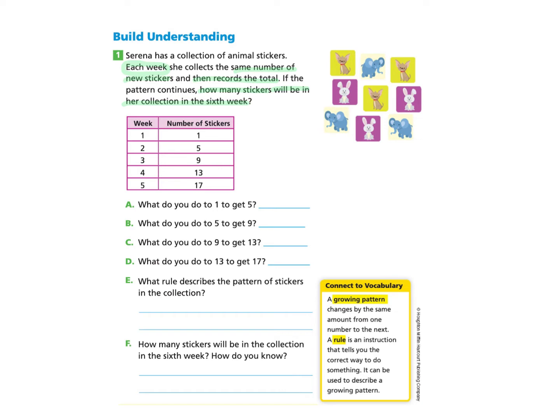Part A asks, what do you do to 1, meaning the number of stickers here, to get to 5? So they're asking, what would you need to do to go from 1 to 5? You can pause and write in your answer, come back and check, and you will find that you need to add 4 to get to 5 because 1 plus 4 makes 5. Let's look at Part B. What do you do to 5 to get 9? And now we're going from 5 to this 9 on the chart. If you want to try this on your own, you can pause and come back, and you will find that you will add 4 because 5 plus 4 makes 9.